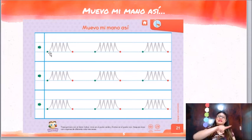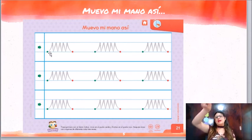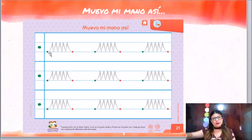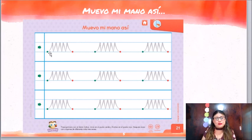Entonces, tu ejercicio dice que comienzas en el puntito verde, vas a subir, bajar, subir, bajar, subir, bajar, subir, llegaste al puntito rojo. Trata de no separar los colores y trata de seguir las líneas de tu ejercicio.